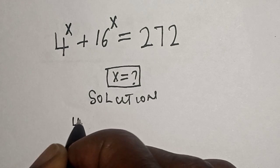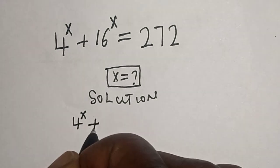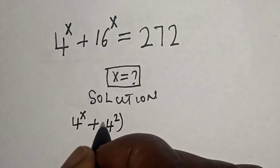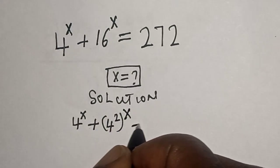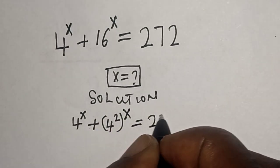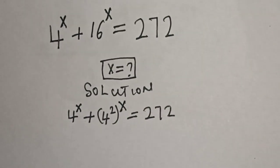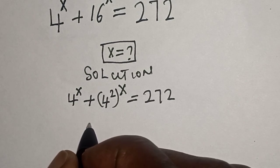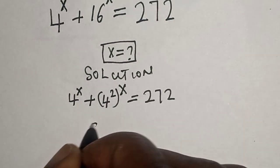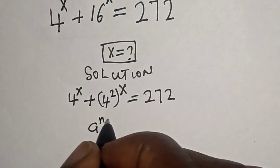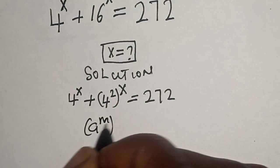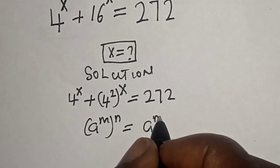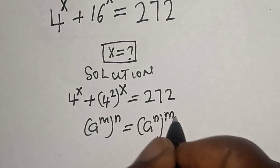4 raised to power s plus 16 raised to power s can be written as 4 squared raised to power s, is equal to 272. Remember this rule: a raised to power m raised to power n is equal to a raised to power n raised to power m.